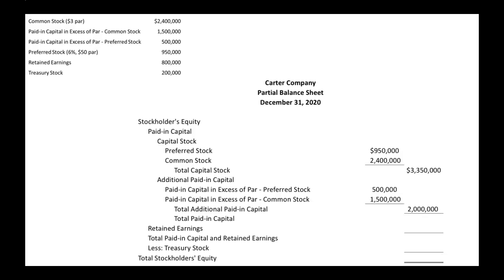Now we need to find total paid-in capital. Paid-in capital is made up of capital stock and additional paid-in capital, so total paid-in capital is $3,350,000 plus $2,000,000, which gives us $5,350,000.